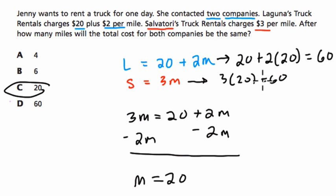So if they ask you when will the two companies cost the same, or when will they intersect if you're graphing, you should set the equations equal to each other and solve for a variable. Alright, hope this helped.